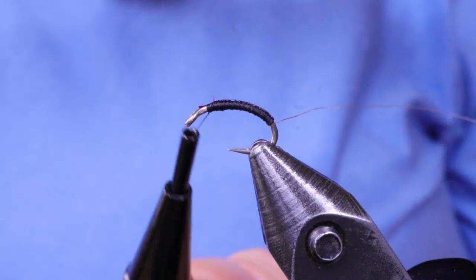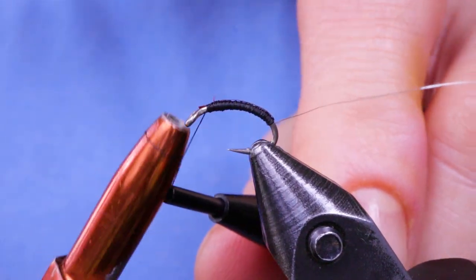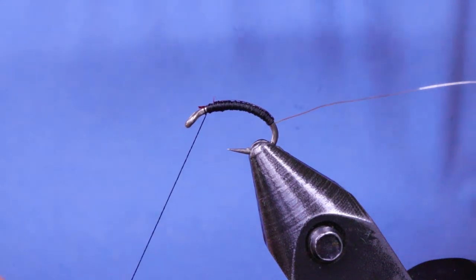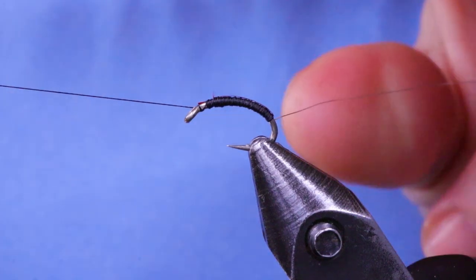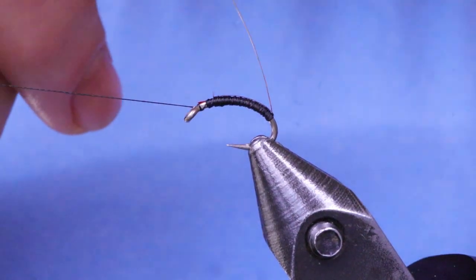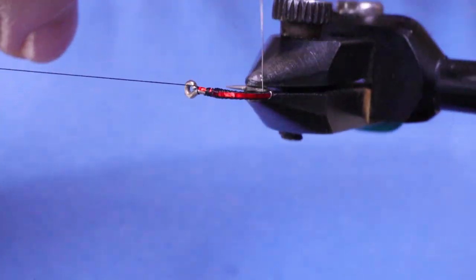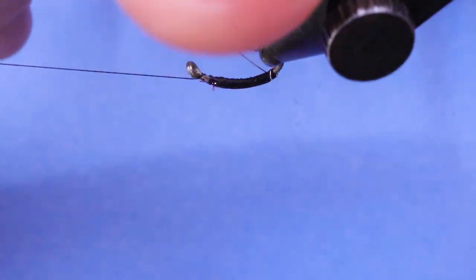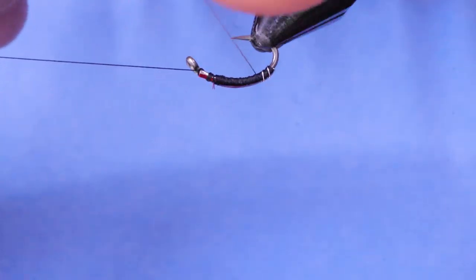I'm just going to throw a half hitch in at this point. Move my thread off to the side. Next I'm just going to take my wire and start making the rib. And ideally you want about seven to eight ribs on a midge or chronomid.